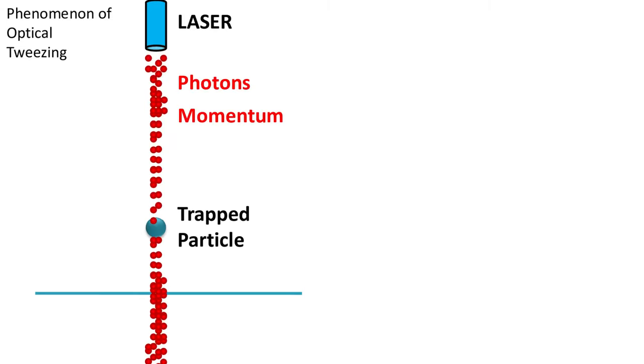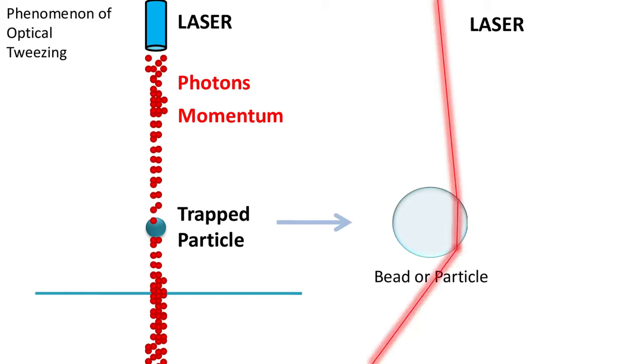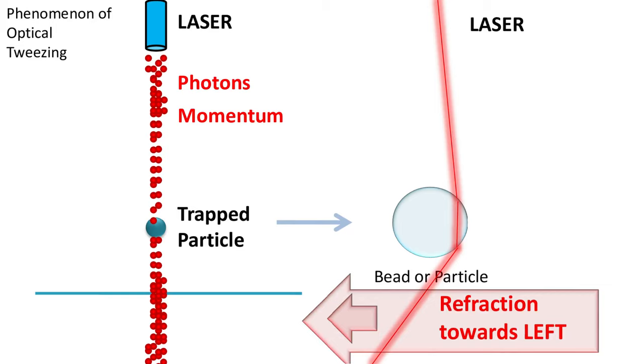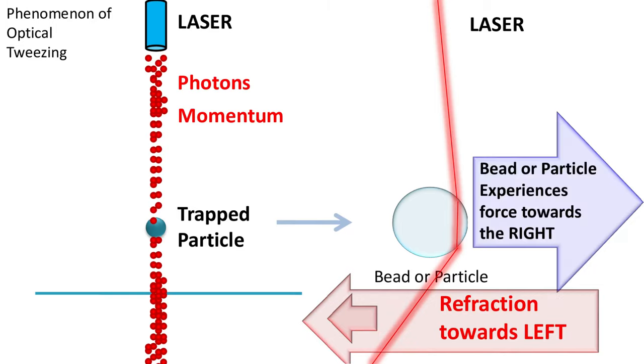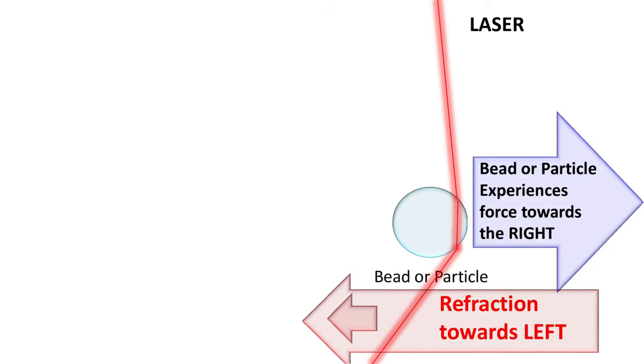Here is how it works. The light has photons and photons have their own momentum. Now, let's say we have a transparent bead and it refracts the light towards the left. Because the bead is refracting the light towards the left, the momentum of photon is also directed towards the left. As a result of this, the bead experiences an equal and opposite force towards the right. This is like Newton's third law.